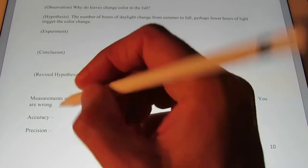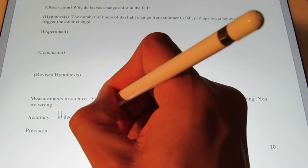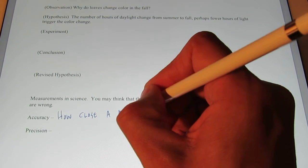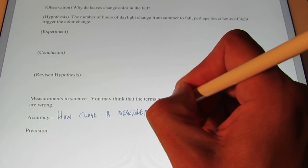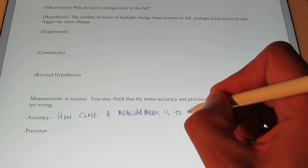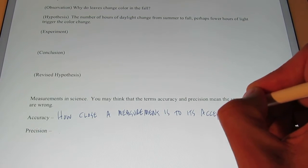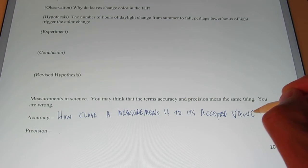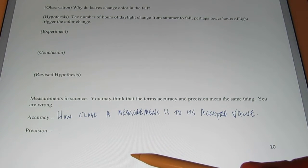So first of all, accuracy is how close a measurement is to its accepted value. How close a measurement is to its accepted value.